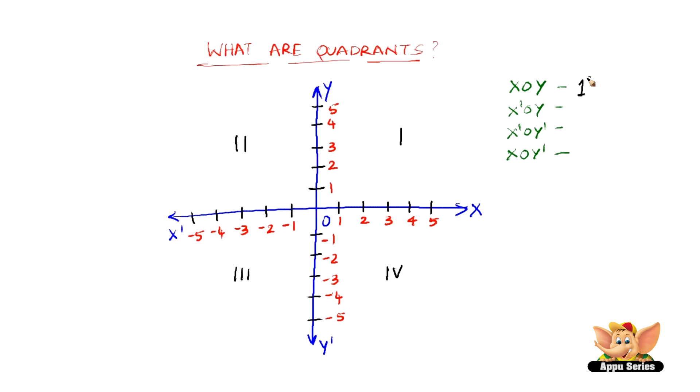And here, let me write it. This is the first, second, third, and fourth. So these are called quadrants.